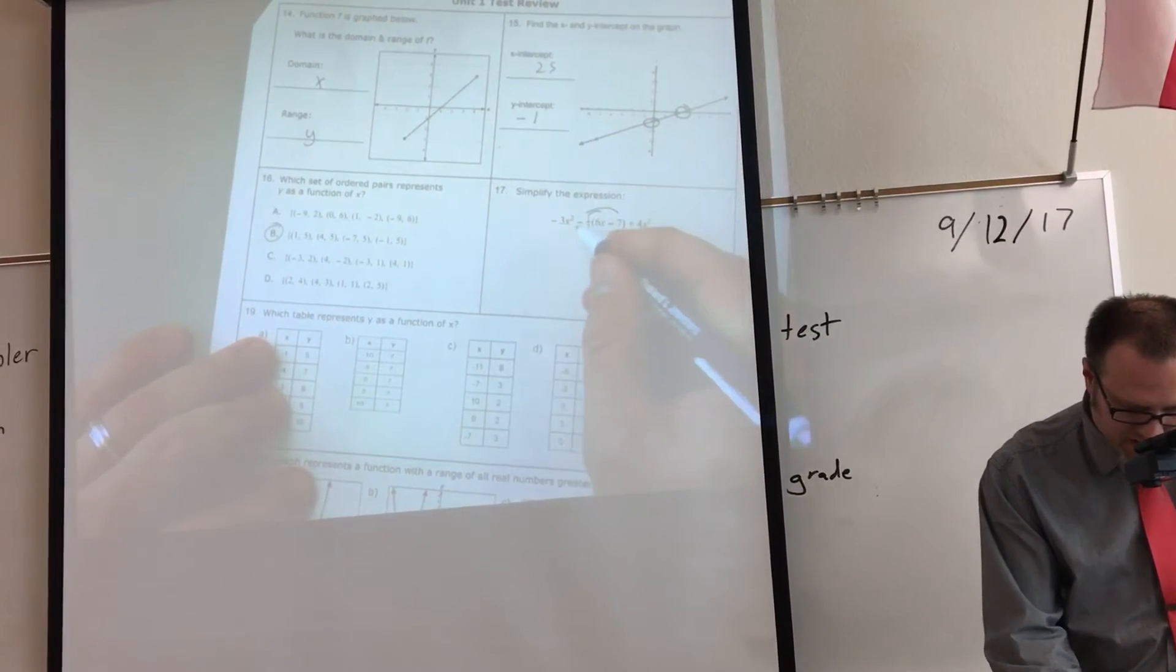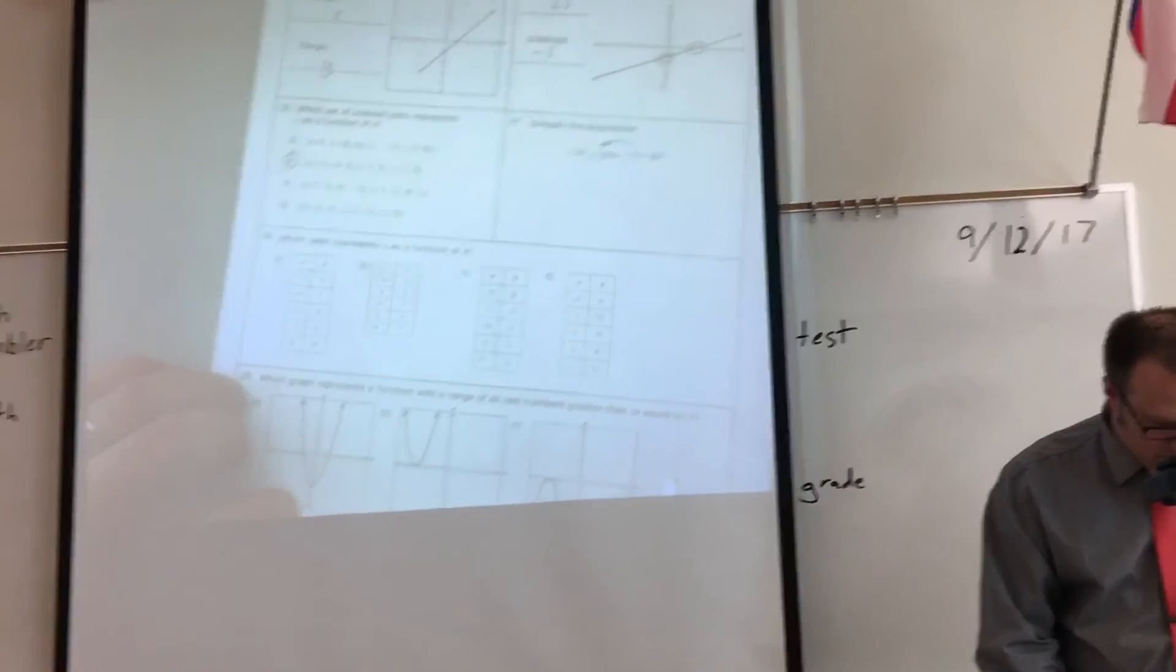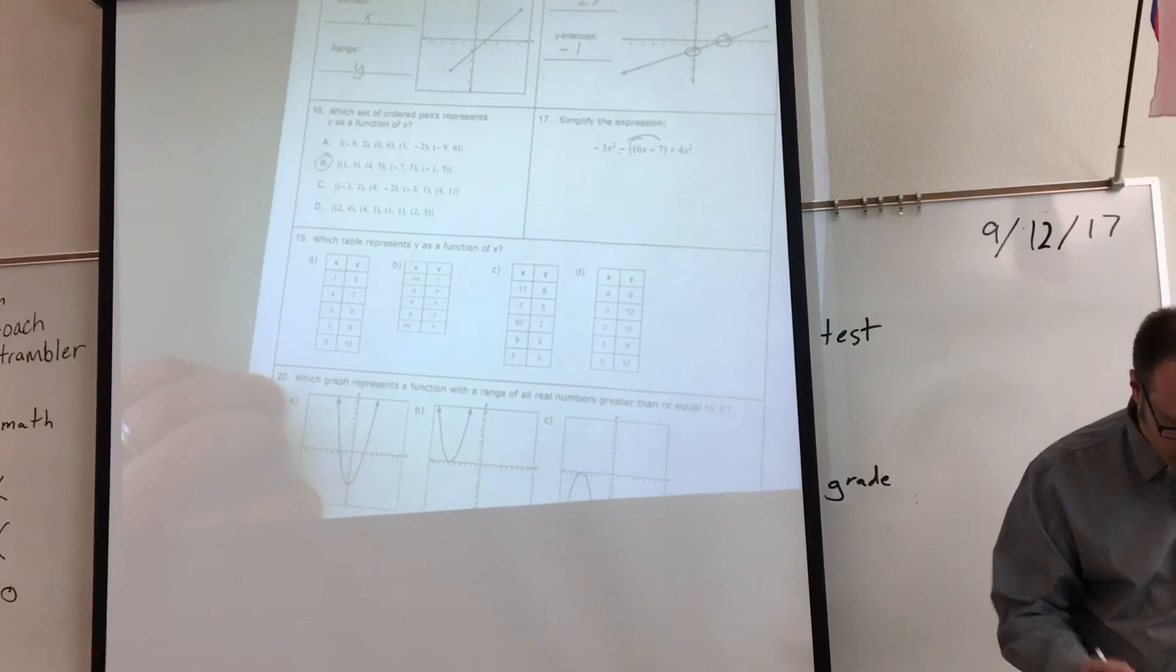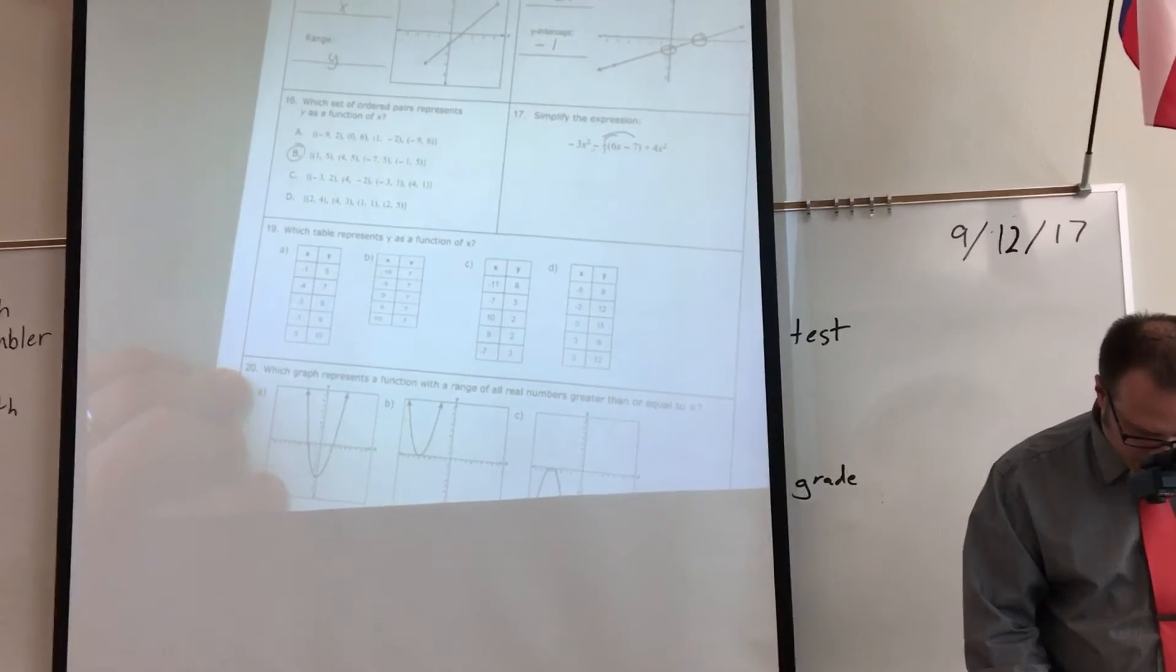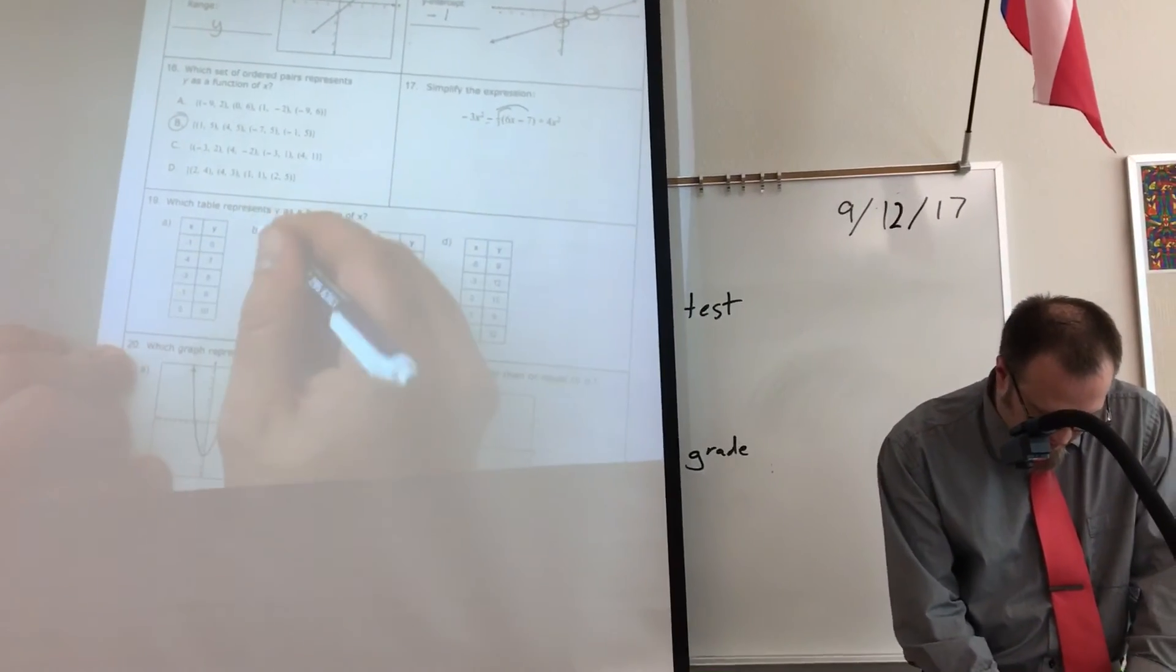When you get a negative times a negative, it's a positive. There's going to be a fraction here. Which table represents a function? We can't repeat the X. So you look for the one that doesn't repeat the X. It's going to be here.